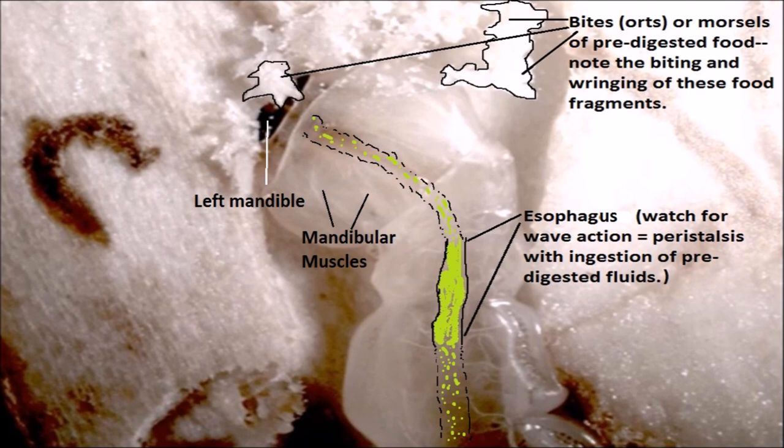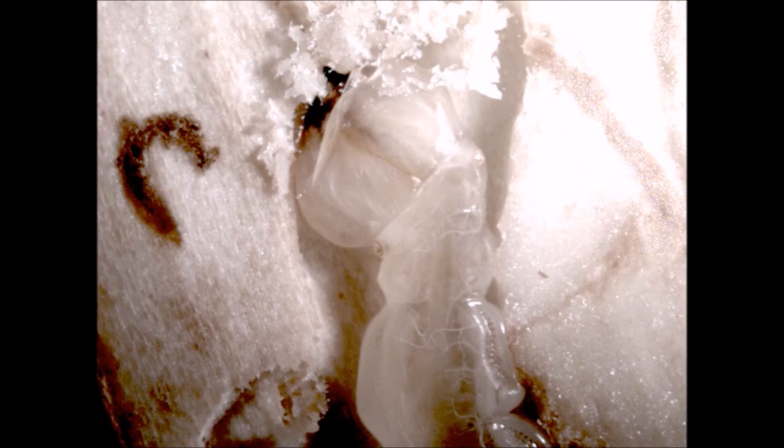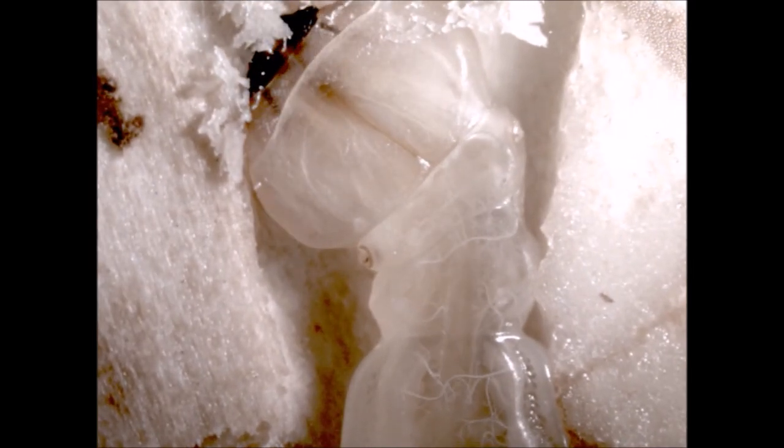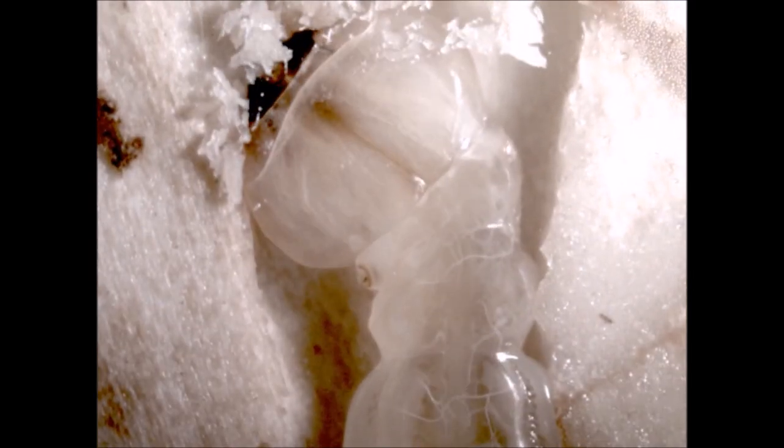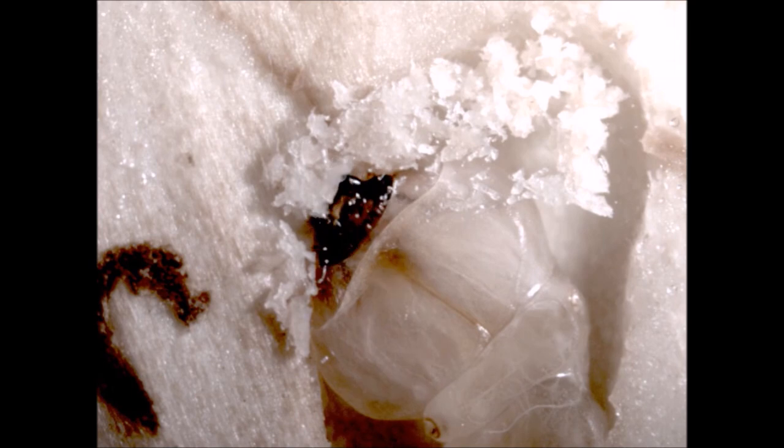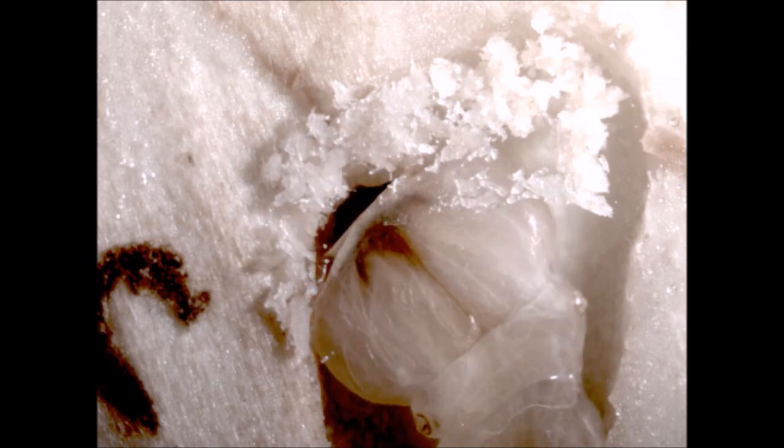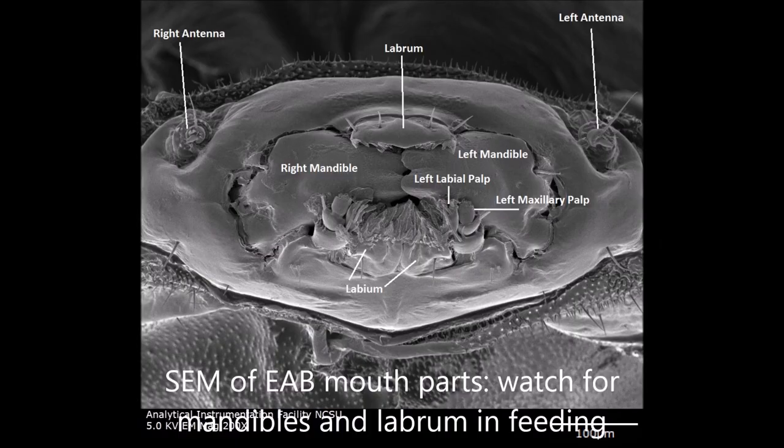This brief diagram shows the orts or morsels of food that the insect bites off and places above its feeding site. You can see how the mouth parts are working. In fact, you can see the insides of the insect through the remarkably transparent cuticle. Here you can see the mandibles and the labrum or upper lip biting, chewing, kneading the morsels of food, and pumping oral secretions into the food.